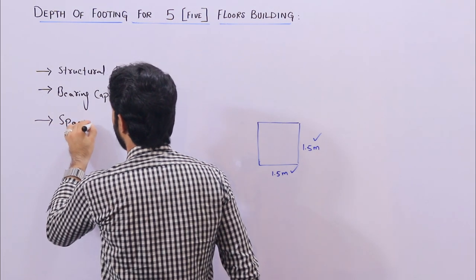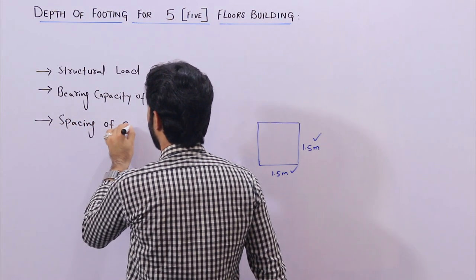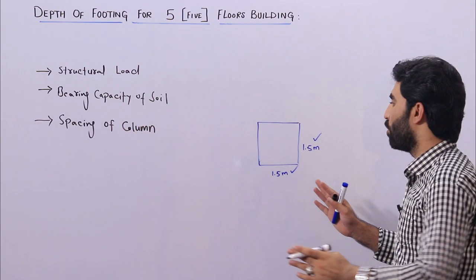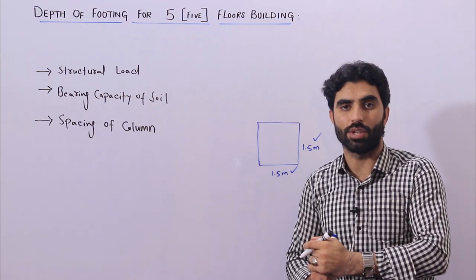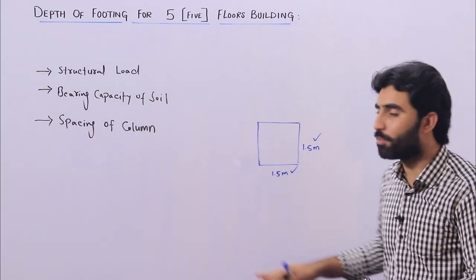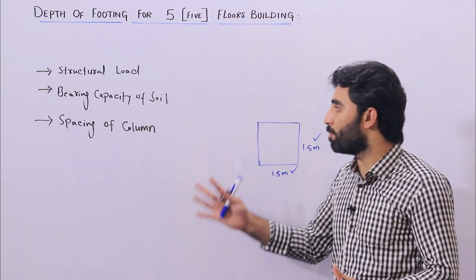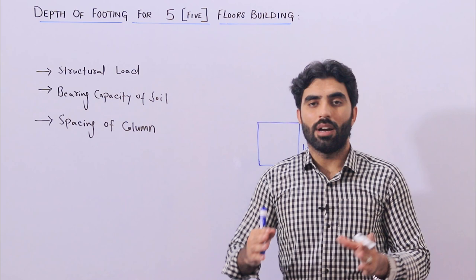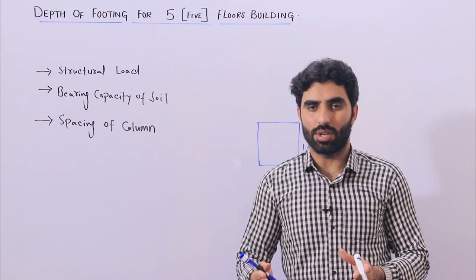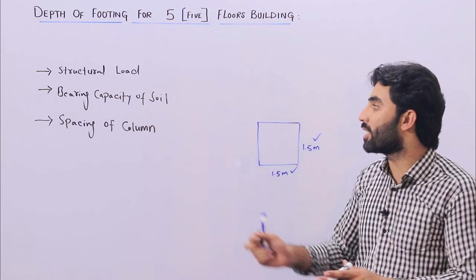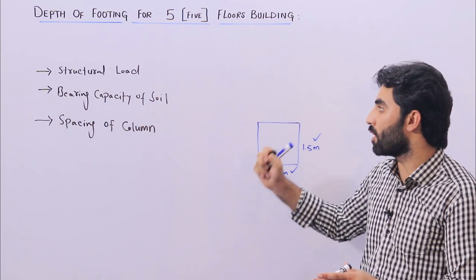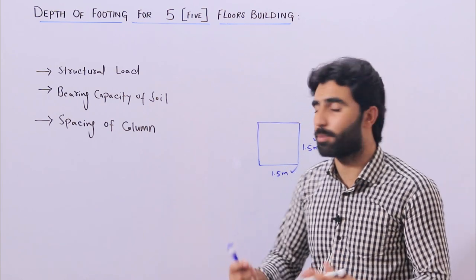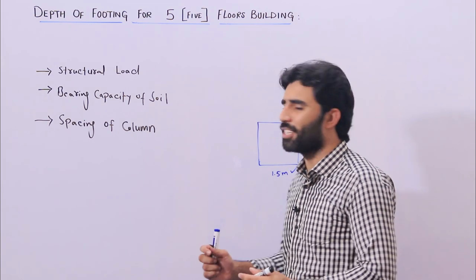The next factor is spacing of columns. If the spacing is maximum, you will increase the size of footing and increase the depth of footing. If you don't know the spacing of columns before finishing the architectural design, you are not able to decide the structural drawing. Sometimes we have maximum spacing, sometimes minimum spacing — you cannot take that decision by yourself or from personal experience.